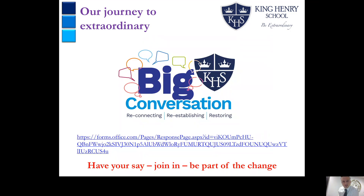We also want to go further in terms of the changes we're making to King Henry School, so we've started what we're calling the big conversation. After the second lockdown, we wanted to reconnect with all of our students — to get you back into the habit of getting up in the mornings, getting your uniform on, getting into school, and just being around other people after months of lockdown. After the May half term, we want to move on to the second step, which we're calling re-establishing — what routines and expectations are we going to re-establish? And then finally, from September, we're going to look to restore: trips and visits, clubs and extracurricular activities, and any lost learning from the last year.